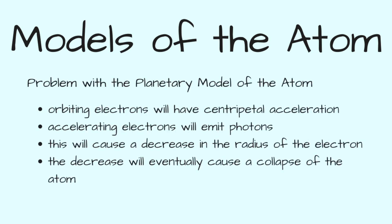There are problems with the planetary model, though. Orbiting electrons will have centripetal acceleration, and accelerating electrons will emit photons. This will cause a decrease in the radius of the electron, which will eventually cause the collapse of the atom. But we know atoms are stable, so we're going to need another model.